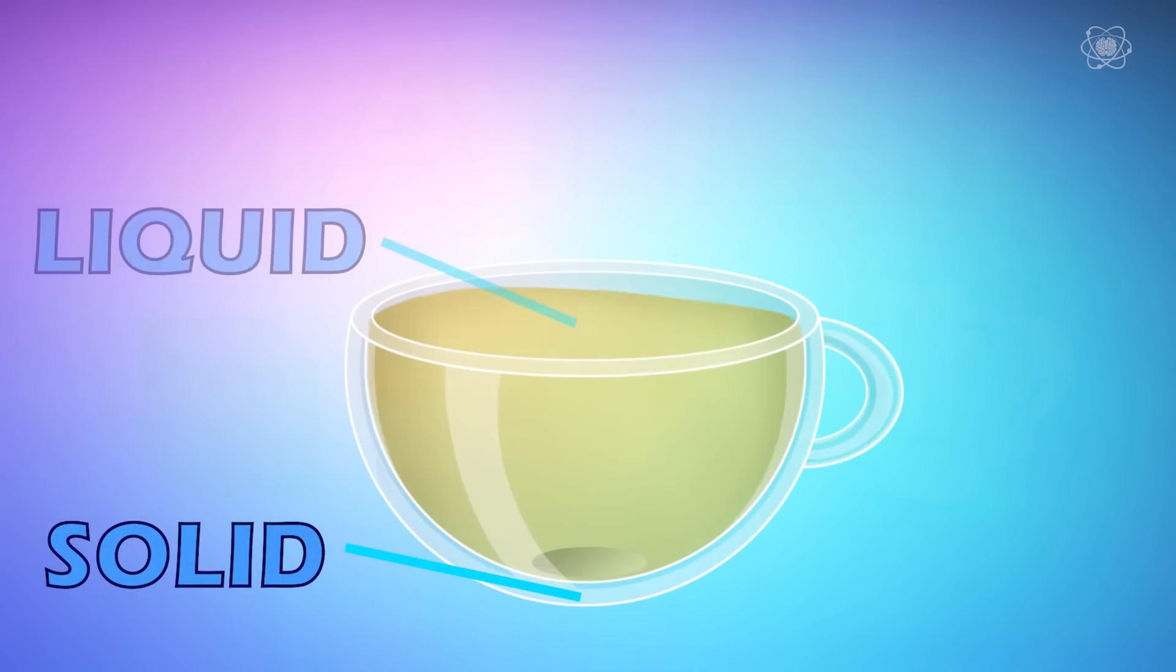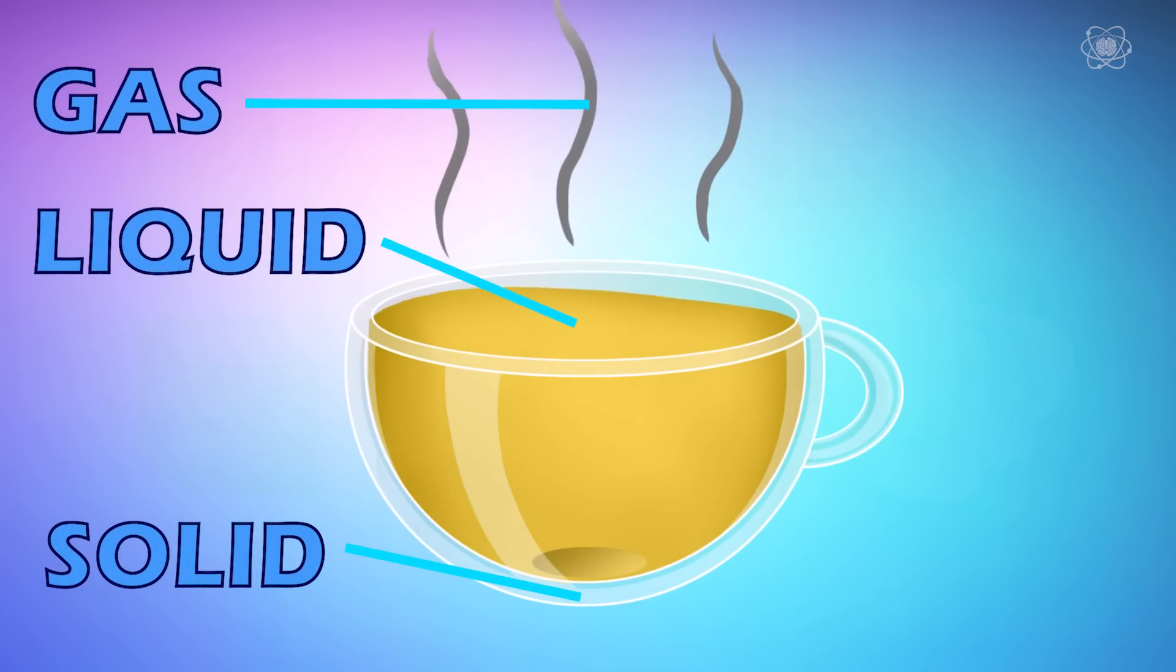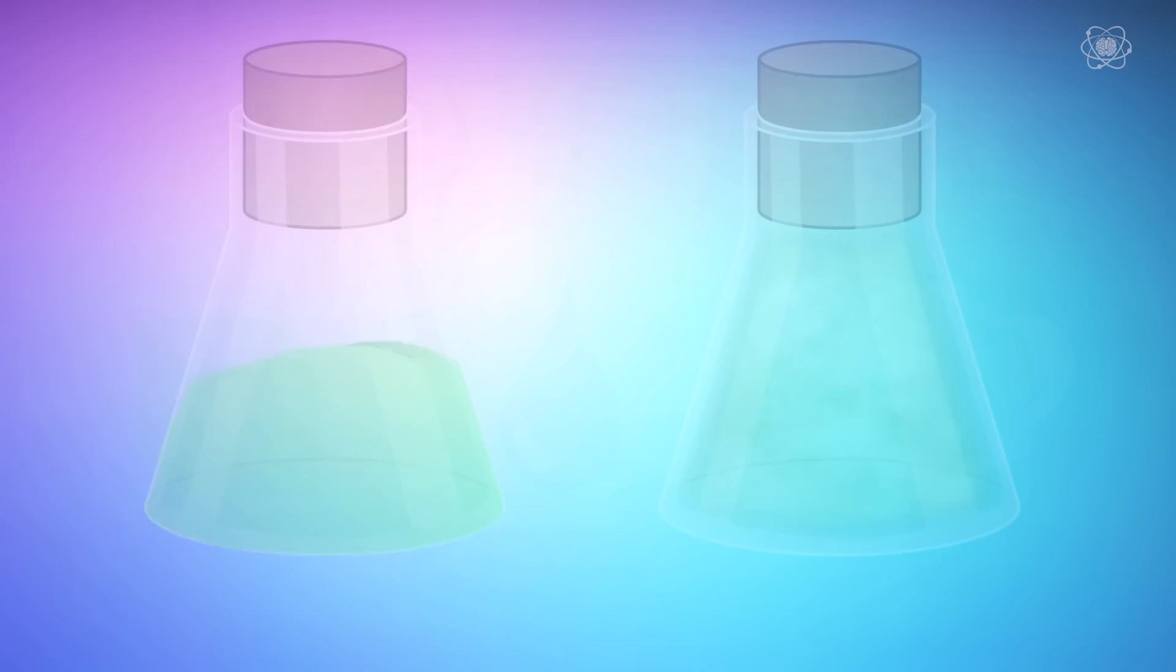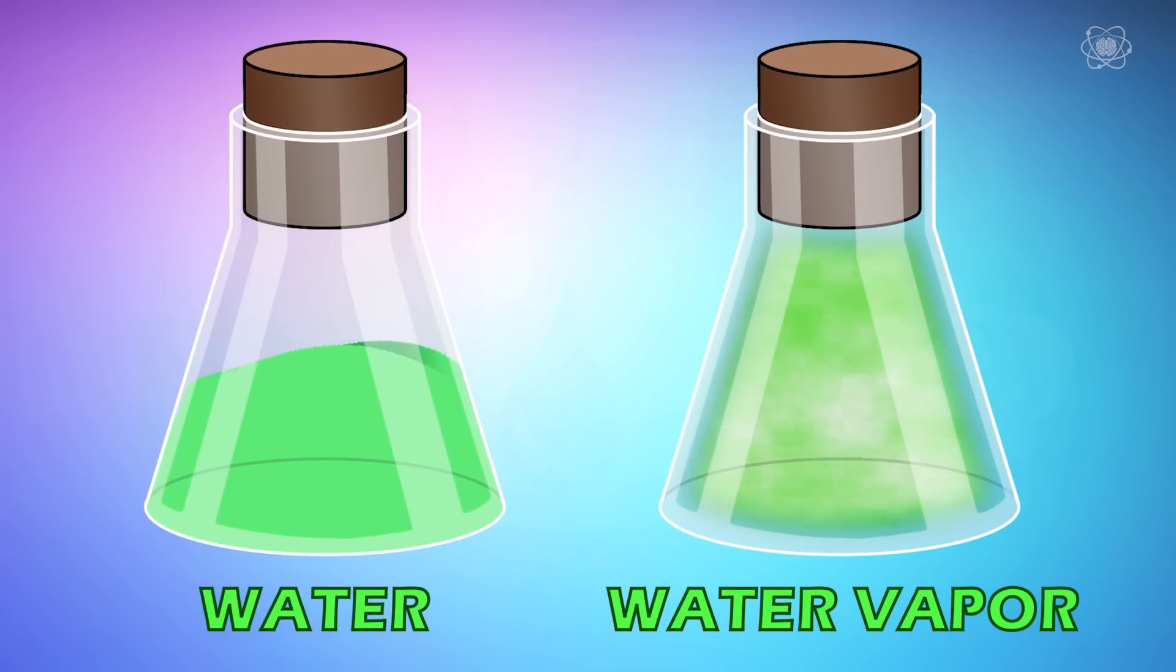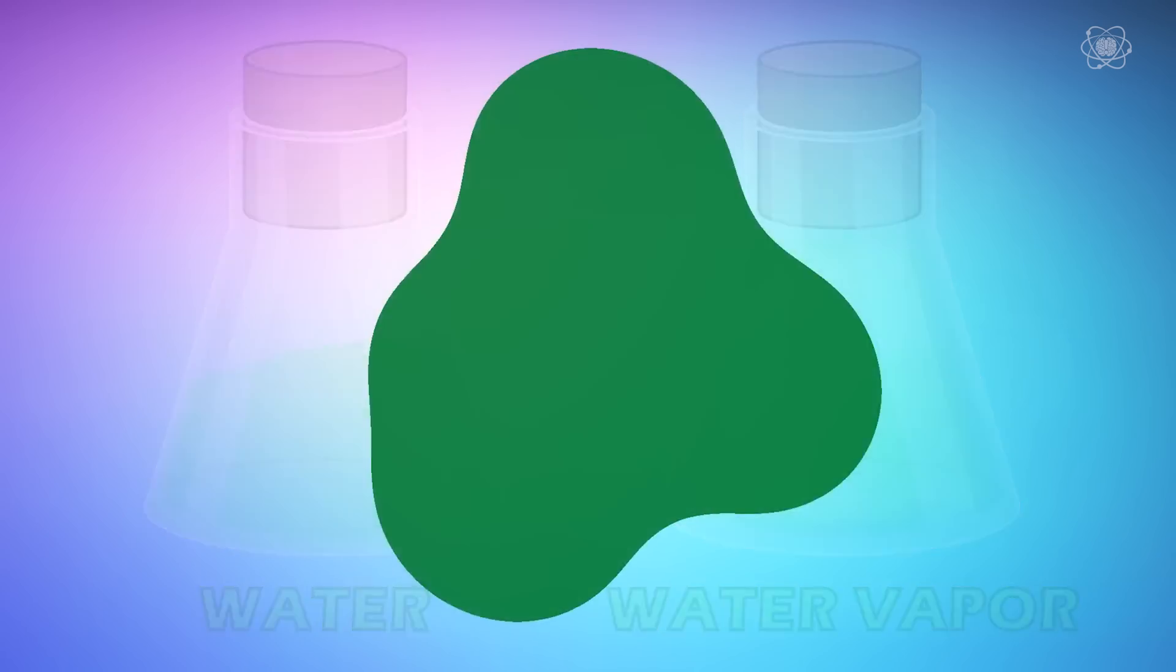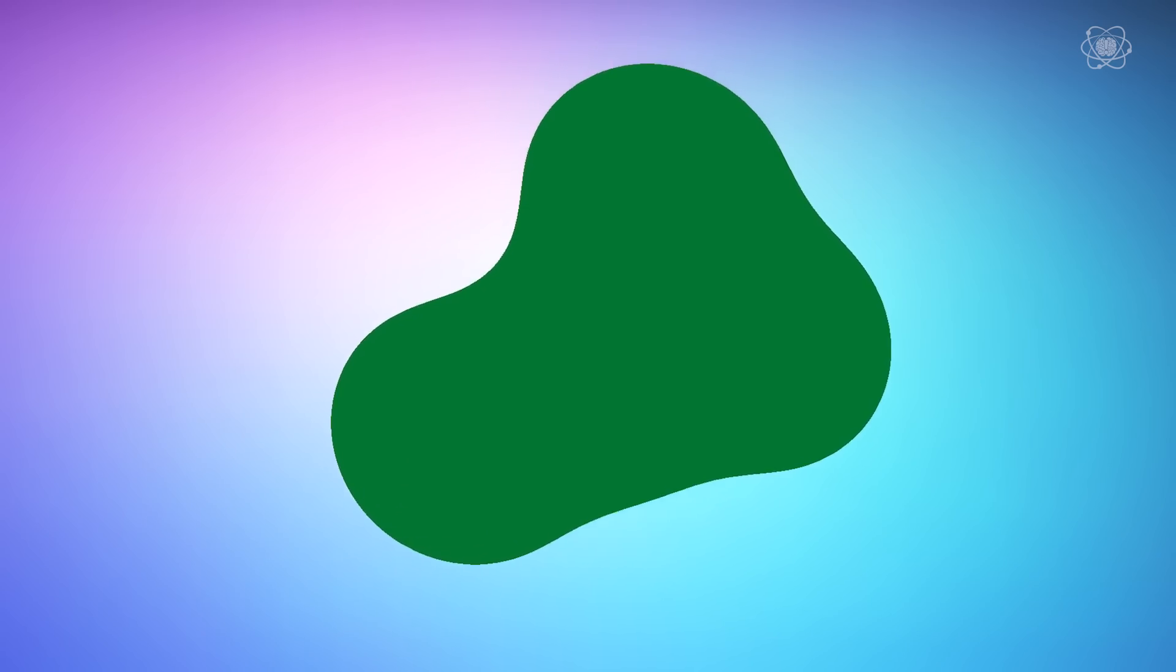Scientists classify those states into solids, and then there's liquids and gases. Solids are easy to understand because they have a fixed shape, while liquids and gases do not have a fixed shape. Both liquids and gases, like water and water vapor, take on the shape of the container they're in, so they have no specific shape.